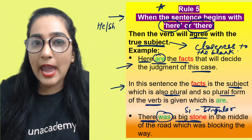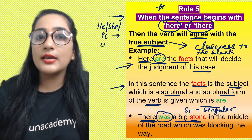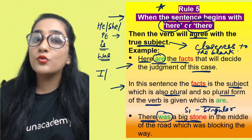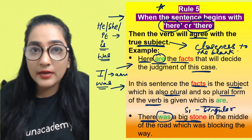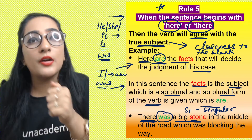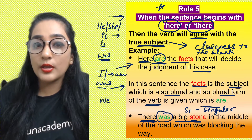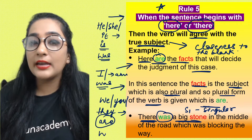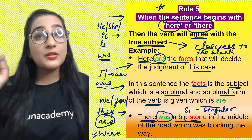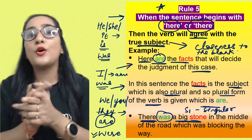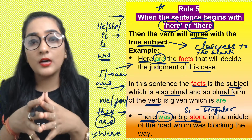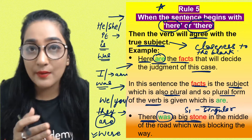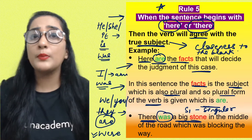With he, she, and it you use 'is' in the present and 'was' in the past. With I you use 'am,' but in the past you use 'was.' With we, you, and they you use 'are' in the present and 'were' in the past. So the past form of 'are' is 'were,' and the past form of 'is' and 'am' is 'was.' Keep these things in mind — they are very important for your personal understanding.